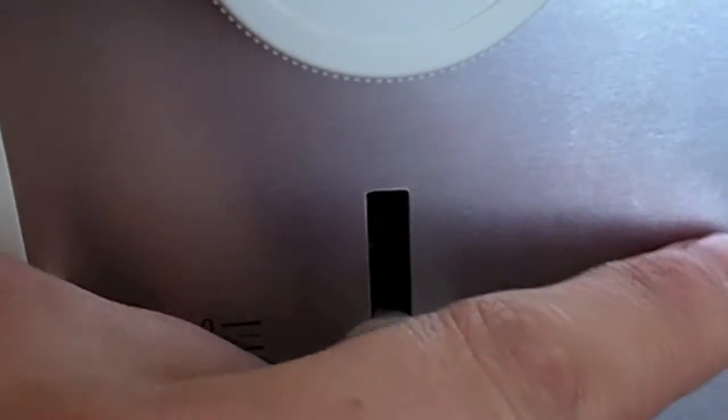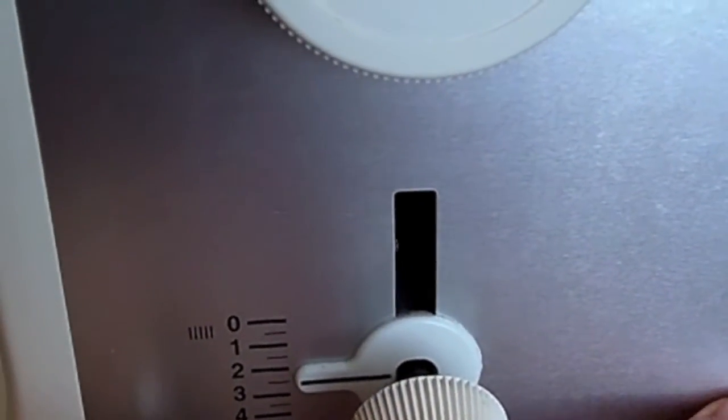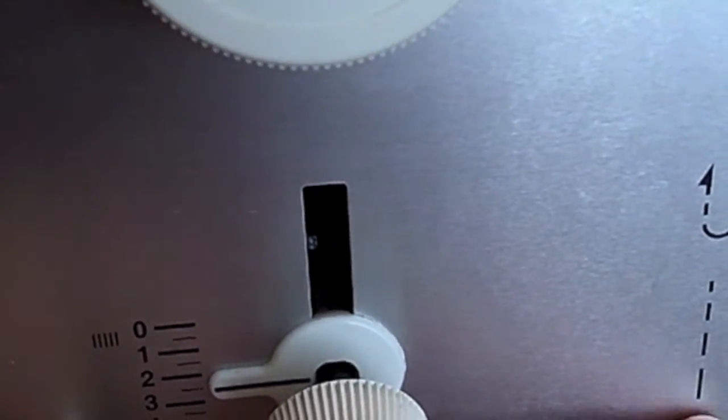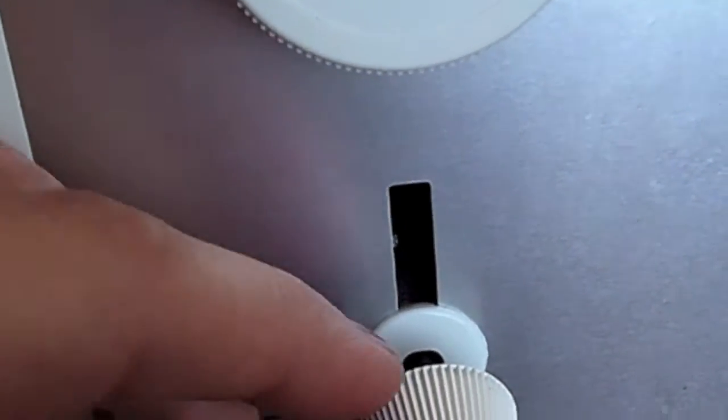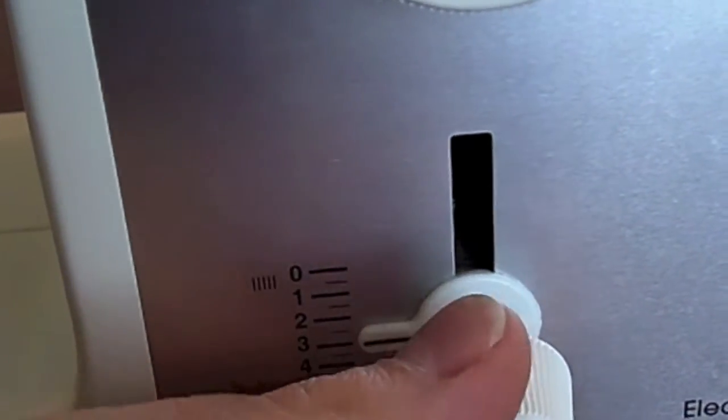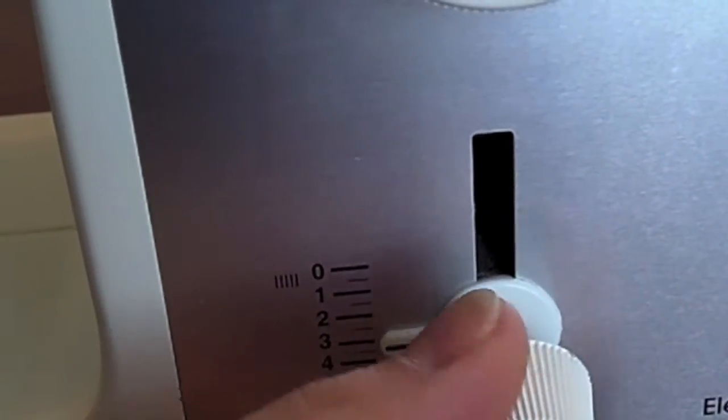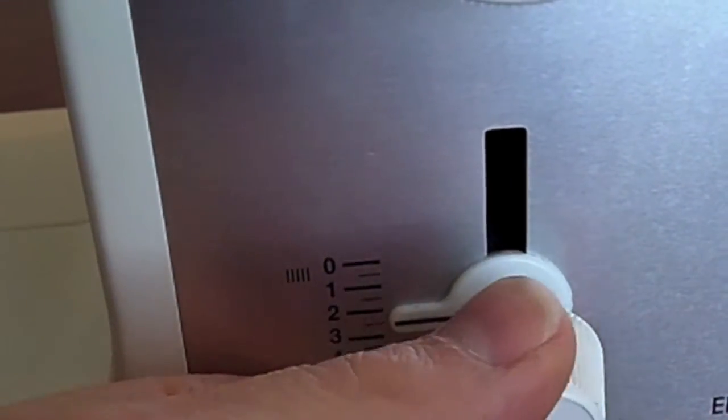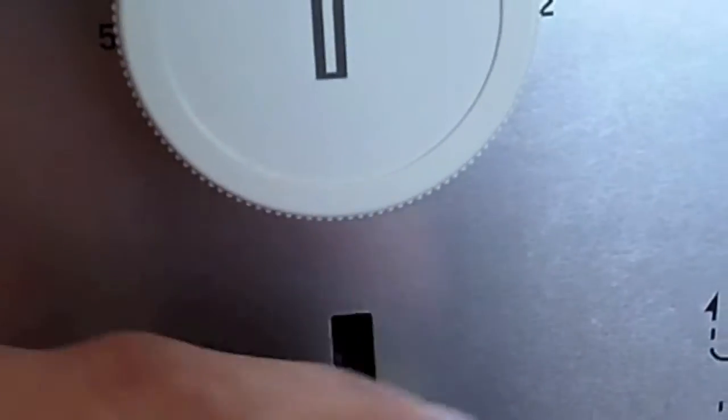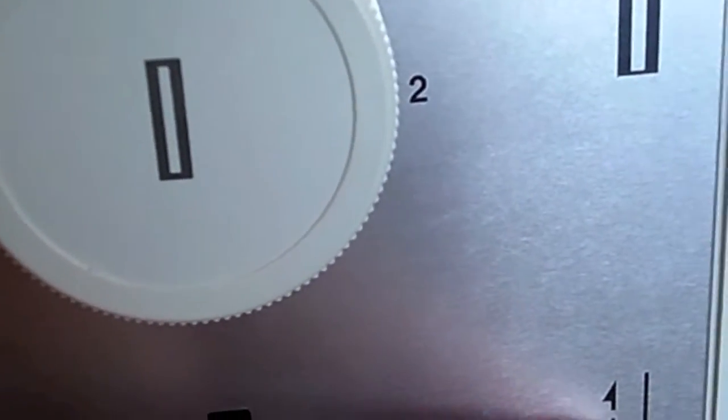So coming down here, you might have another feature or dial of some sort that lets you change the length of your stitch. Okay, so you should see this symbol somewhere. So on this machine you just turn the dial, and that makes your stitch longer, or turn it back to a shorter.